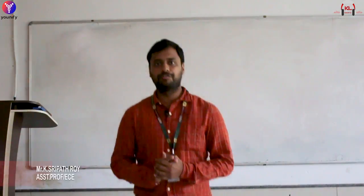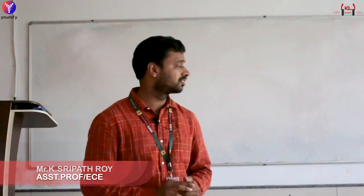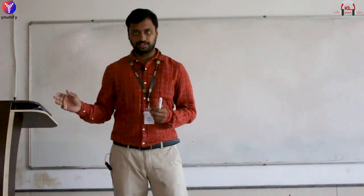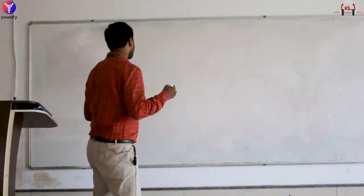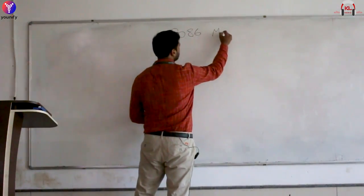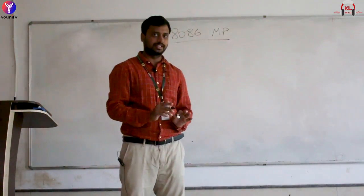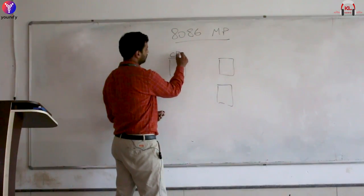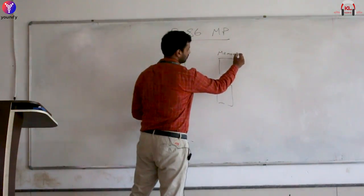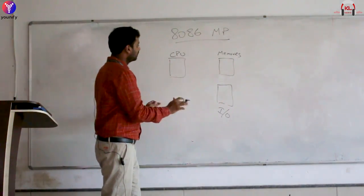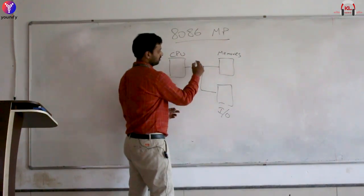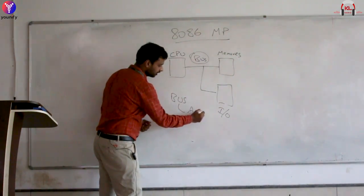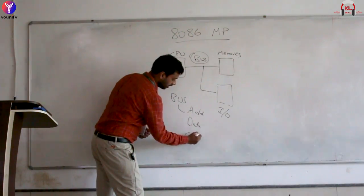Welcome to the quick review of 8086 microprocessors and microcontrollers. We'll cover the whole syllabus in CO1 through CO4 in a quick format. We'll start with the 8086 microprocessor. A microprocessor is a component in a larger computer. Any computer is categorized into three categories: CPU, memory, and input/output. All three components are integrated by a bus, which is categorized into address bus, data bus, and control bus.